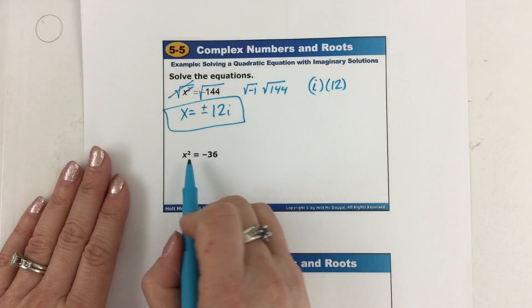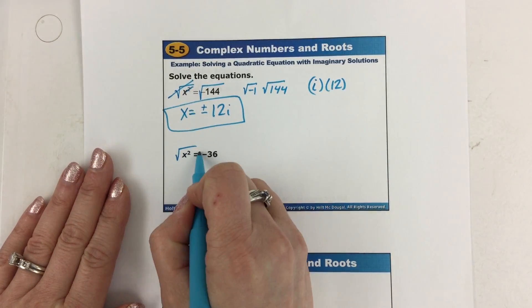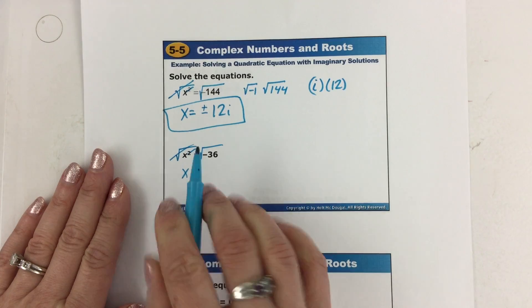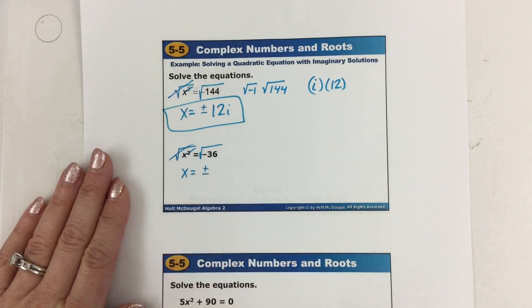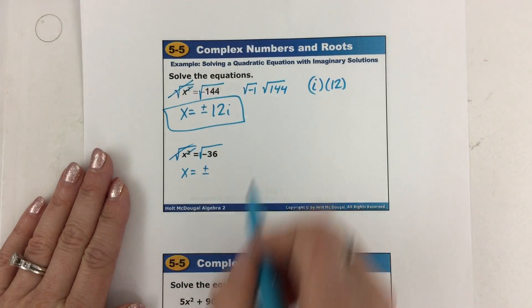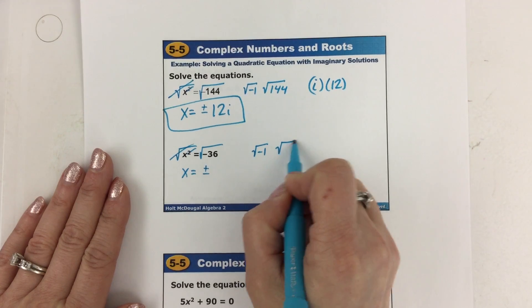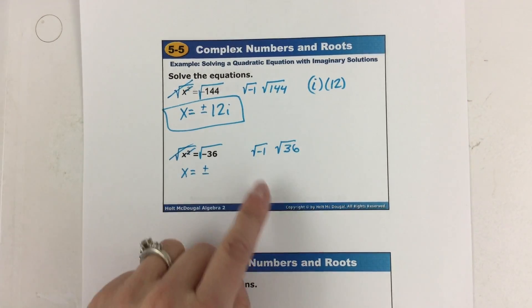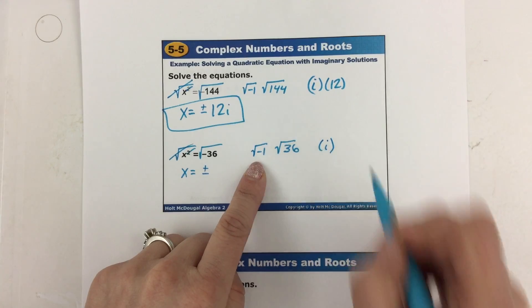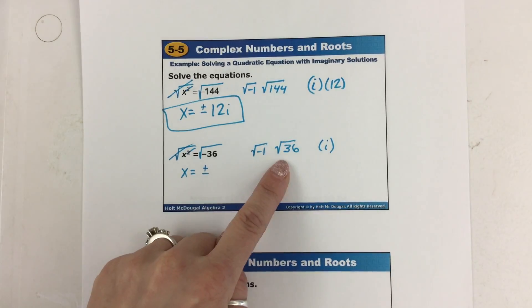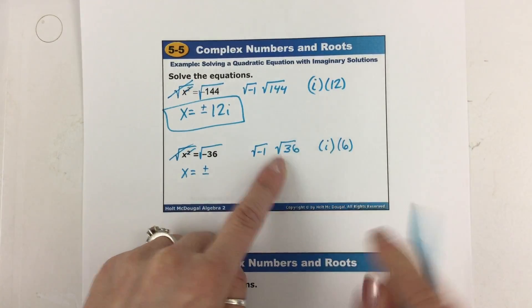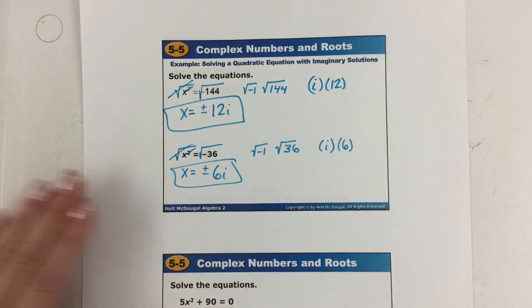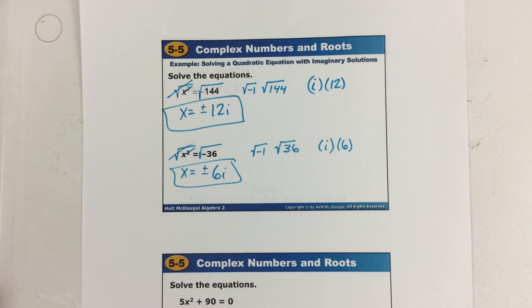Let's go again. To cancel a power of 2, take the square root — that cancels it, so x equals plus or minus. Take out the negative 1, making the square root of 36 positive. Square root of negative 1 by definition is i, square root of 36 is 6, so i times 6 is 6i. Your solution is plus or minus 6i.